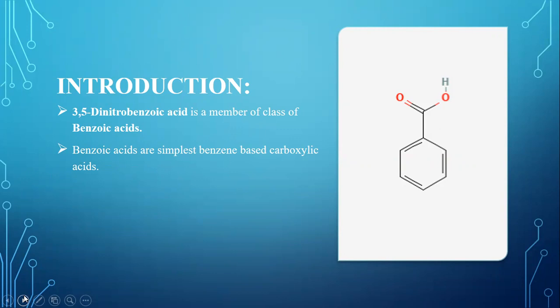Benzene is an organic compound with formula C6H6. This molecule is composed of six carbon in a ring with one hydrogen attached to each carbon. And carboxylic acids are functional group consisting of carbon atom that is double bonded to oxygen atom and singly bonded to hydroxyl group.